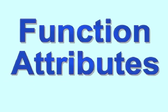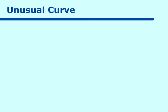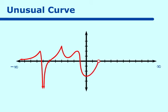This lesson is on function attributes. We are given this unusual curve. Looking at it, we come from negative infinity, turn up, go to a maximum, come down with an asymptote, continue on from the asymptote towards another maximum, then come around to another maximum, come down to a minimum, and there is a hole at two. Then two lines almost like an absolute value function, and then we go on to what looks like a parabola, continuing towards positive infinity.